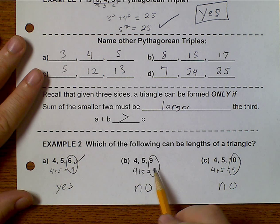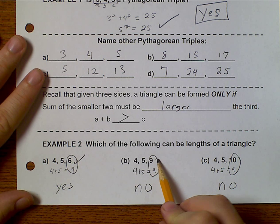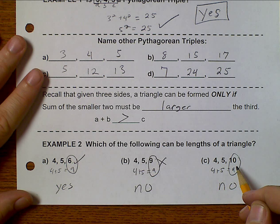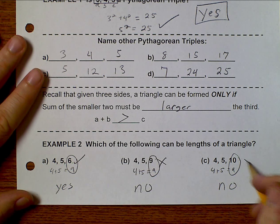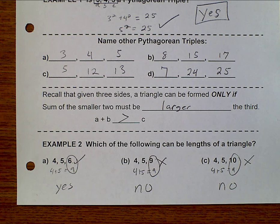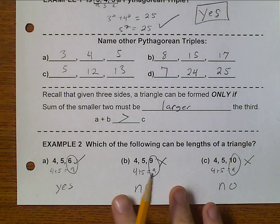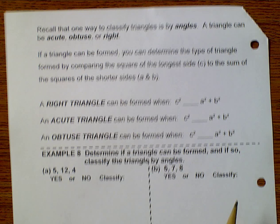9 and 9 are equal, that's why that one does not check out. And 9 is less than 10, so it also doesn't check out. Now, we can only be a triangle if the two smaller ones are greater.